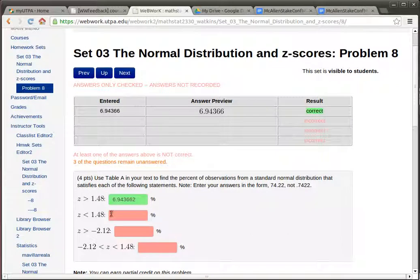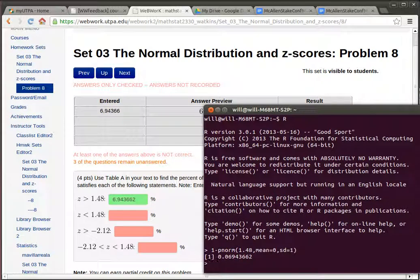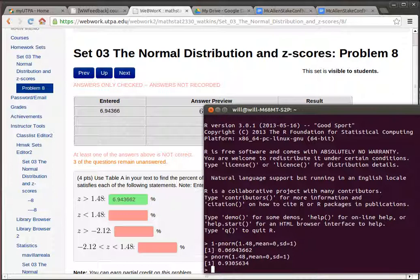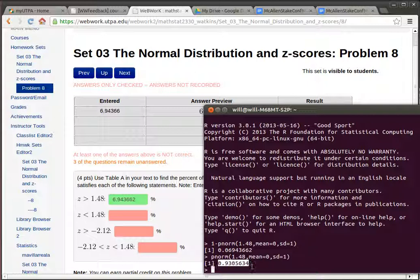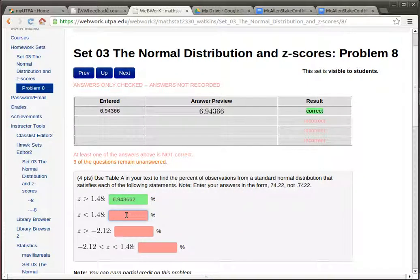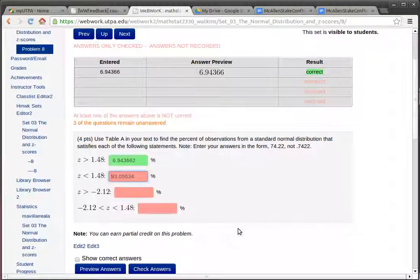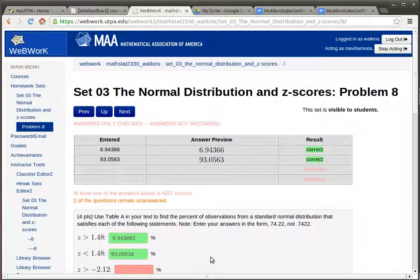Now if it was less than 1.48, then we actually found that as part of our answer before. I really didn't want to subtract that amount from 1. I just really wanted to know the area where Z is less than 1.48. So that would be that amount. I can just copy and paste that into there. And notice that they wanted it written as a percent. So the decimal place has to move 2 to the right. So it's 93%. Let's check that answer. And of course that's correct.